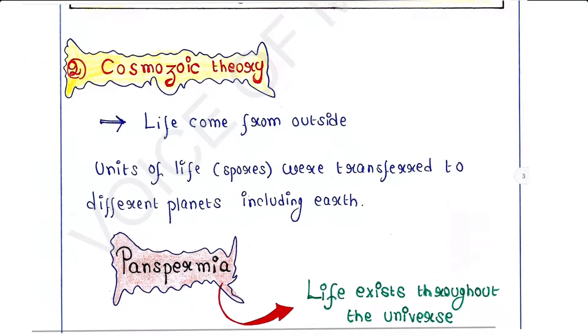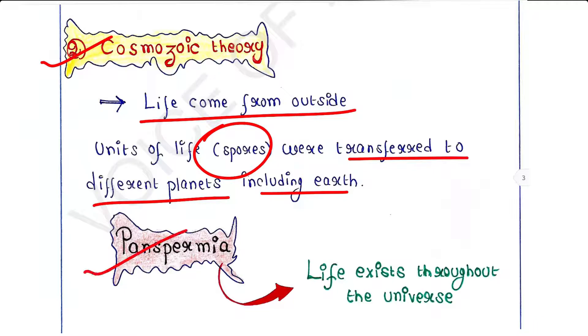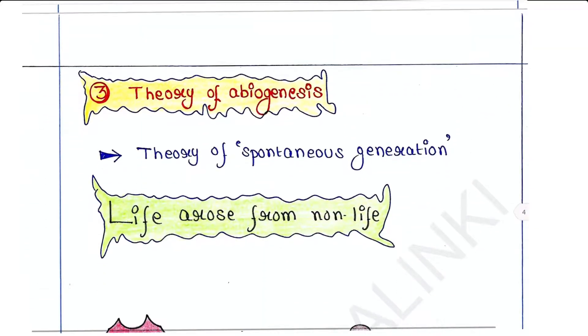Next theory is cosmozoic theory. This theory states that life came from outside. Early Greek thinkers thought units of life, called spores, were transferred to different planets including earth. This is called panspermia, which means life exists throughout the universe. This theory also does not provide strong evidences.